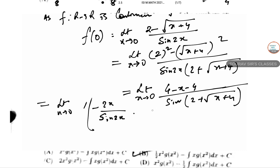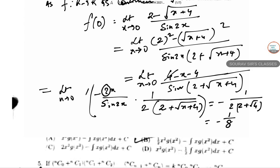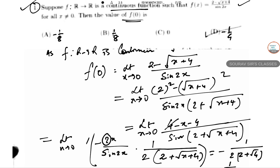Dividing by sine 2x times (1/2), we get minus 2x over sine 2x times 1 over (2 plus root over (x+4)). Using the standard limit — limit x tends to 0 of sin x / x equals 1 — we get minus 1 divided by (2 plus 2) which is minus 1/8.